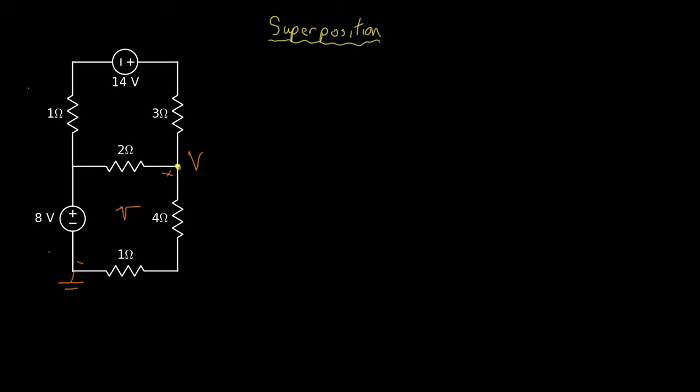So the superposition method says that we can find the voltage V by adding up the response due to each source. So we're going to call those two voltages V1 and V2.